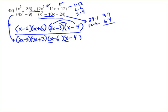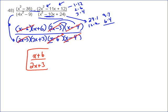So you've factored everything you can factor. Now we've got to cancel out things they have in common. You've got x minus 6 on the top and x minus 6 on the bottom, a 2x minus 3 on the top and a 2x minus 3 on the bottom, and x minus 4 on top and x minus 4 on the bottom. So you're left with x plus 6 over 2x plus 3, and that's your simplified answer.